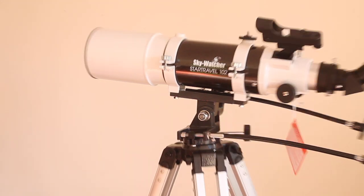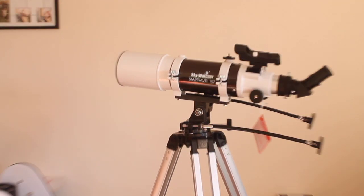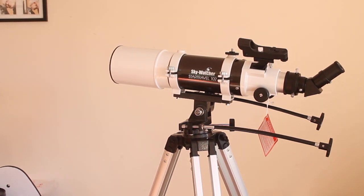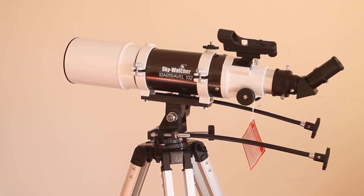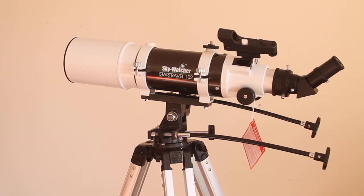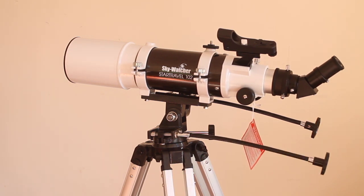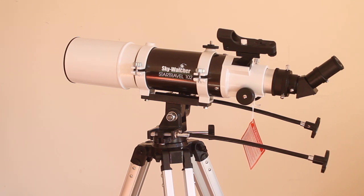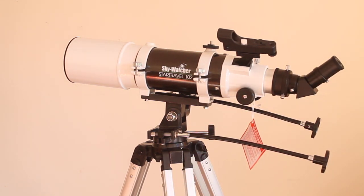Back onto the tripod, you will notice, the clue is in the title, it is a slow motion control tripod with these controllers here. Up and down, left and right, it moves slowly. If you want it to move more freely and you don't want to use those, you can slacken off here and under here. I've shown that in another video.